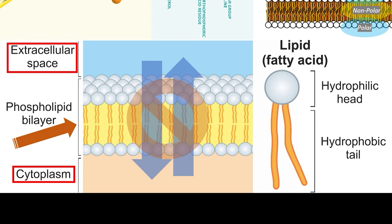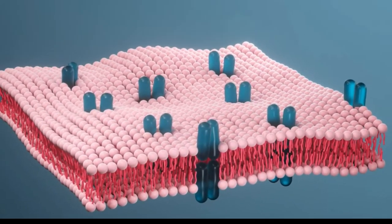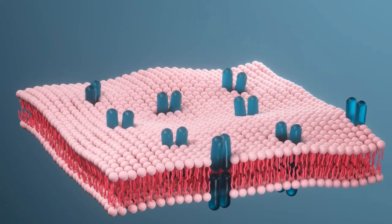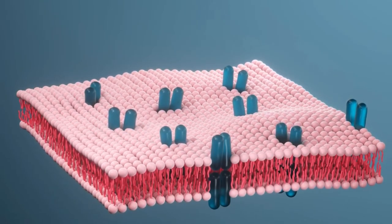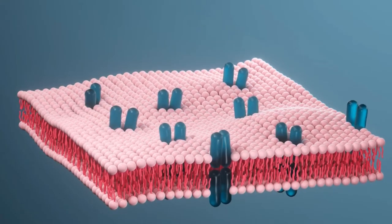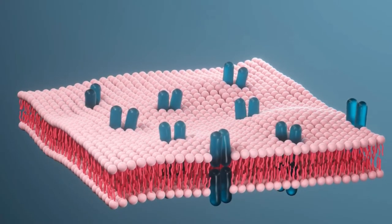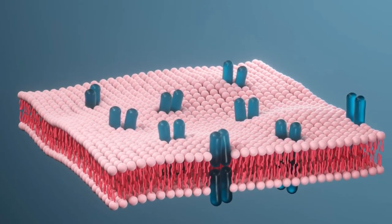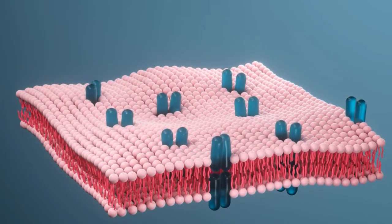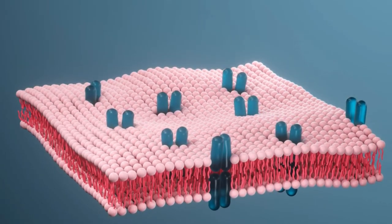However, you should not consider the phospholipid bilayer a solid structure. In fact, each phospholipid remains completely independent of the other phospholipids, interacting only through weak hydrogen bonds and nonpolar interactions. Therefore, these phospholipid molecules are constantly flowing and moving around, like a fluid.